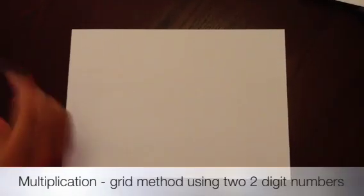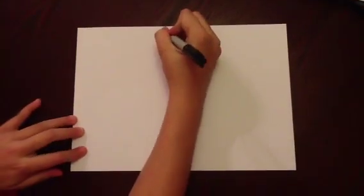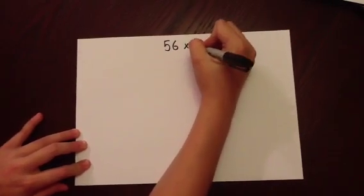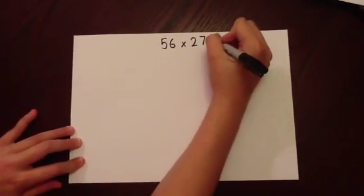Multiplication using grid method. Multiplying a two-digit number by a two-digit number. Write the number clearly at the top, 56 multiplied by 27.